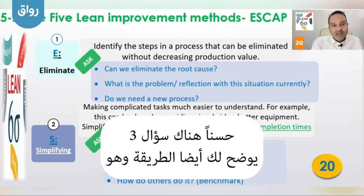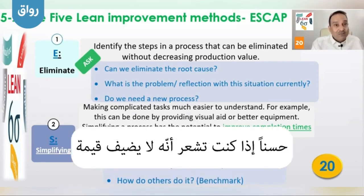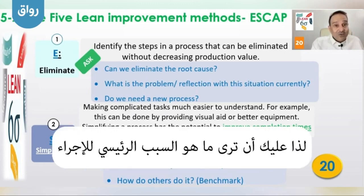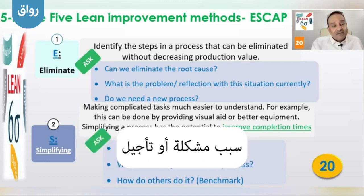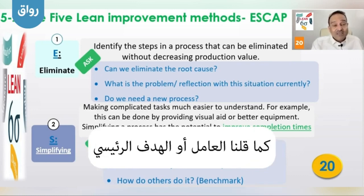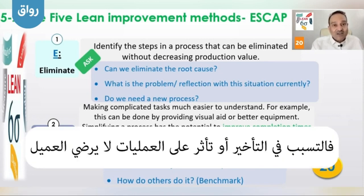There are three questions that will guide you in this one. First, can we eliminate the root cause? Because you feel it is not adding value, so you need to see what is the root cause of that one. What is the problem related to this situation currently? If there is anything that is causing a delay, our main target and main methodology is to satisfy the customer, so why is it not satisfying the customer or causing the delay or affecting the process?